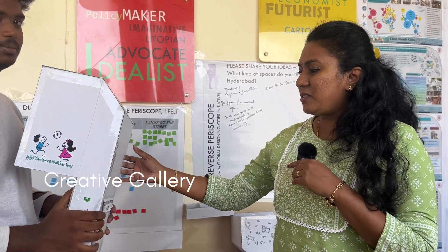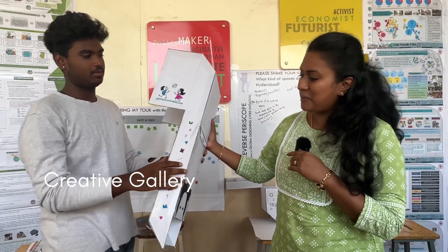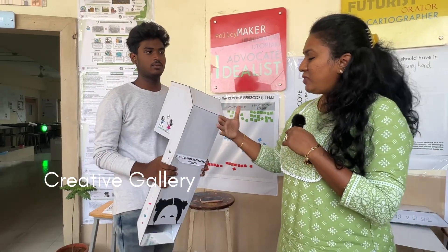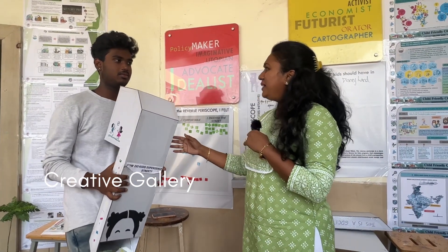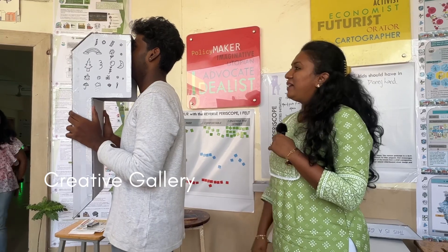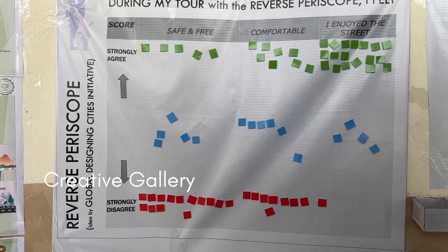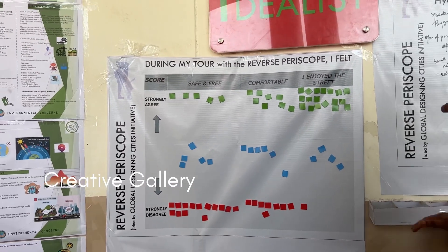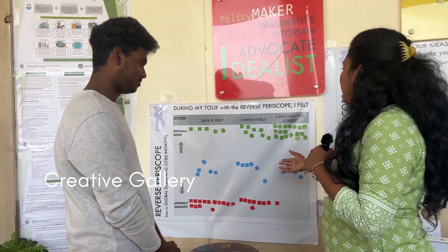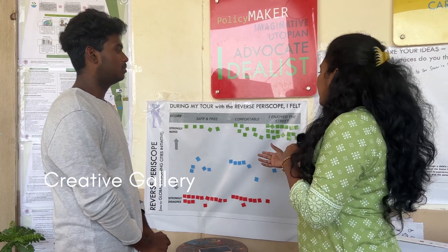I am Dhruvita, faculty in the Department of Urban and Regional Planning. This is a small exercise to show how a child feels in the street. This is a reverse periscope which shows an adult what the street looks like at a child's eye level. You can pull it to that level and walk in the street. Then you fill out a sheet mentioning how you felt — whether you felt safe, free, comfortable, and whether you enjoyed the street — from a child's perspective.